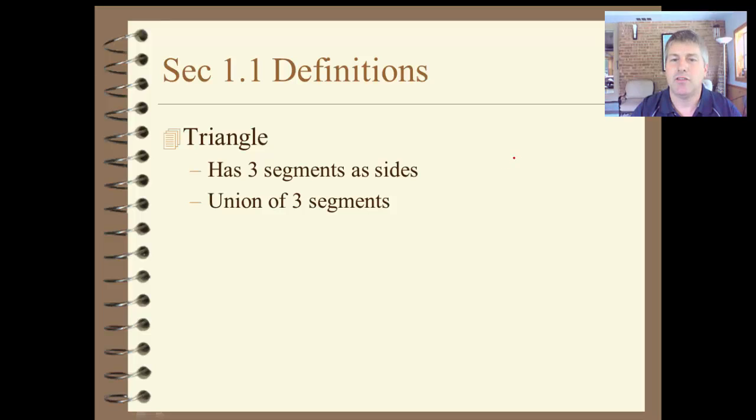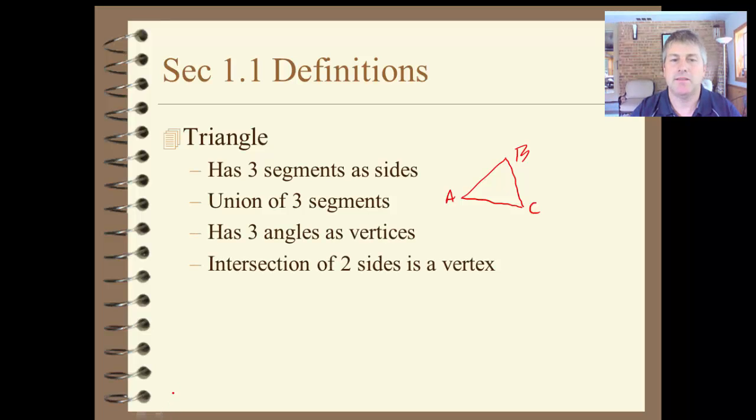A triangle. The last thing in our video here. A triangle has three segments as sides. It's the union of those three segments. So we might have segment AB, segment BC, and segment AC. And we have triangle ABC. It's made up of three sides. It has three angles as vertices. Our angles are A, B, and C. And the intersection of two sides is the vertex. We talked about that already. A is a vertex. B is a vertex. C is a vertex. And a triangle is named by its vertices.